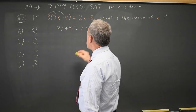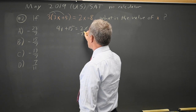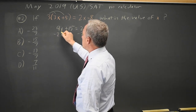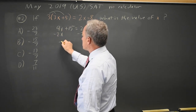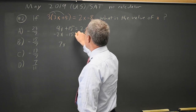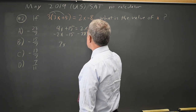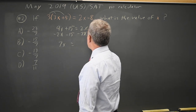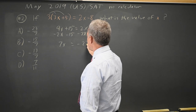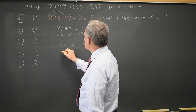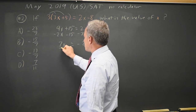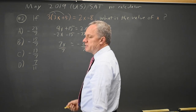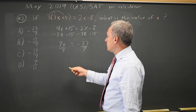Now I'll combine like terms. Subtract 2x from both sides — 9x minus 2x is 7x. Then subtract 15 from both sides. Negative 8 minus 15 is negative 23. To get x by itself, I have to divide. Always do the same thing to both sides of your equation.